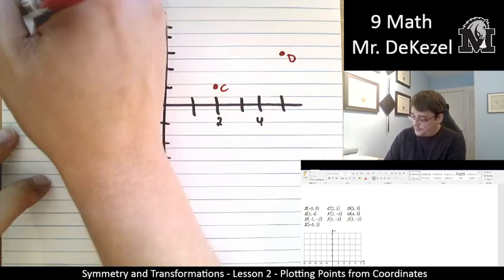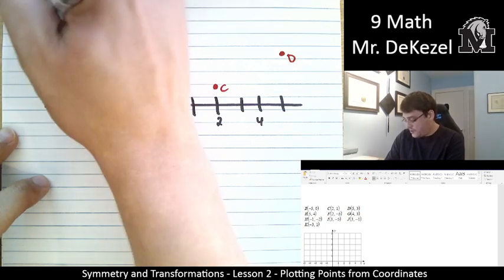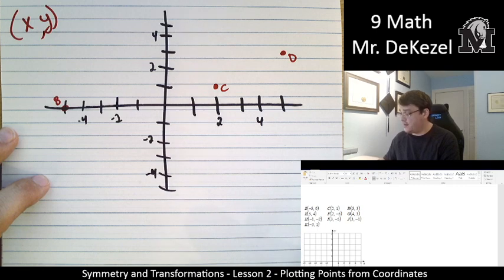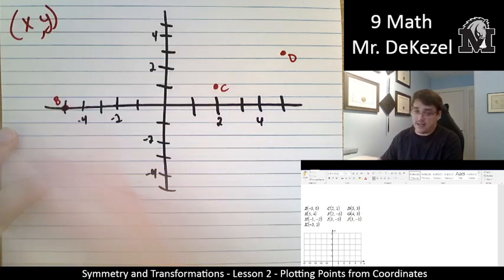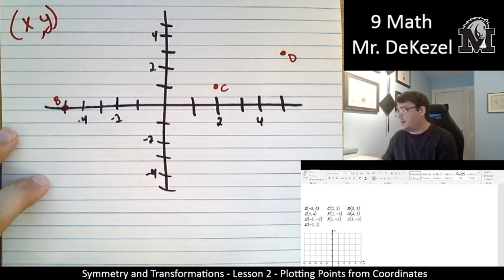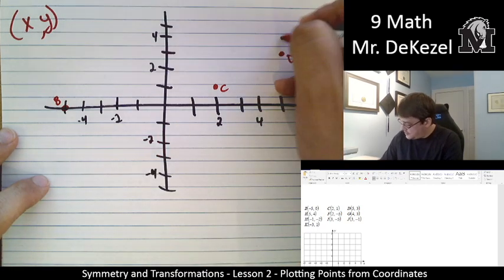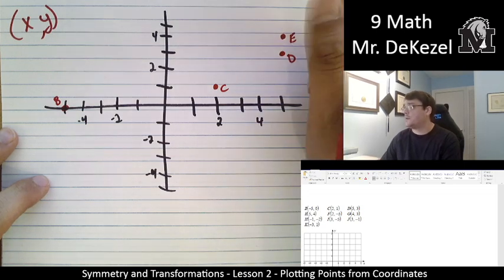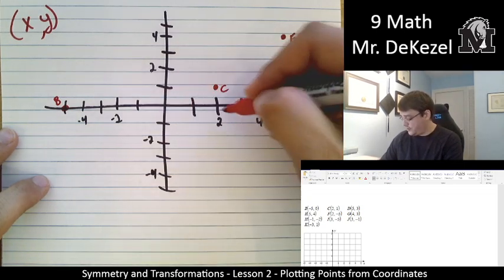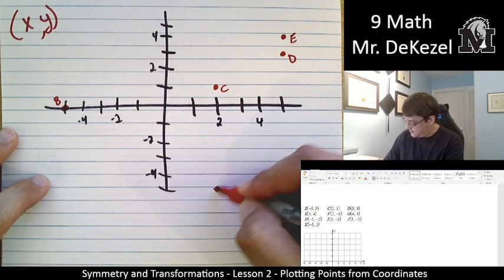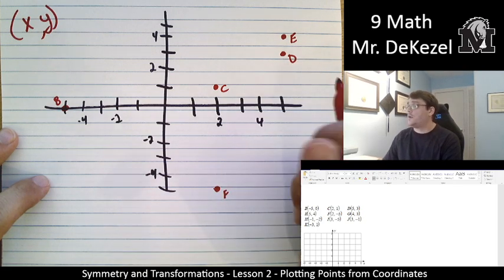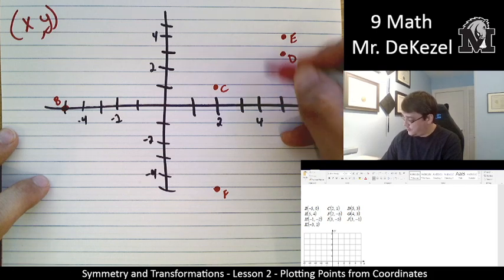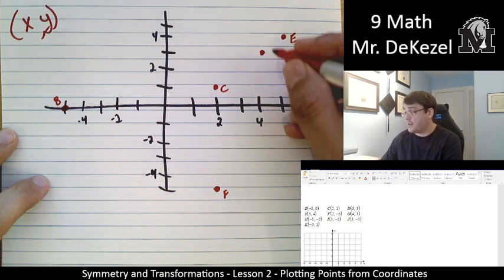So remember, when we have our brackets, it's the x value first and the y value second. x and then y. So this is side to side and then up and down. E is 5 to the right and 4 up. So that's just one single unit above D. We have F, which is 2 to the right and 5 down. We have G, which is 4 to the right. 1, 2, 3, 4 and 3 up. One unit to the left of D.